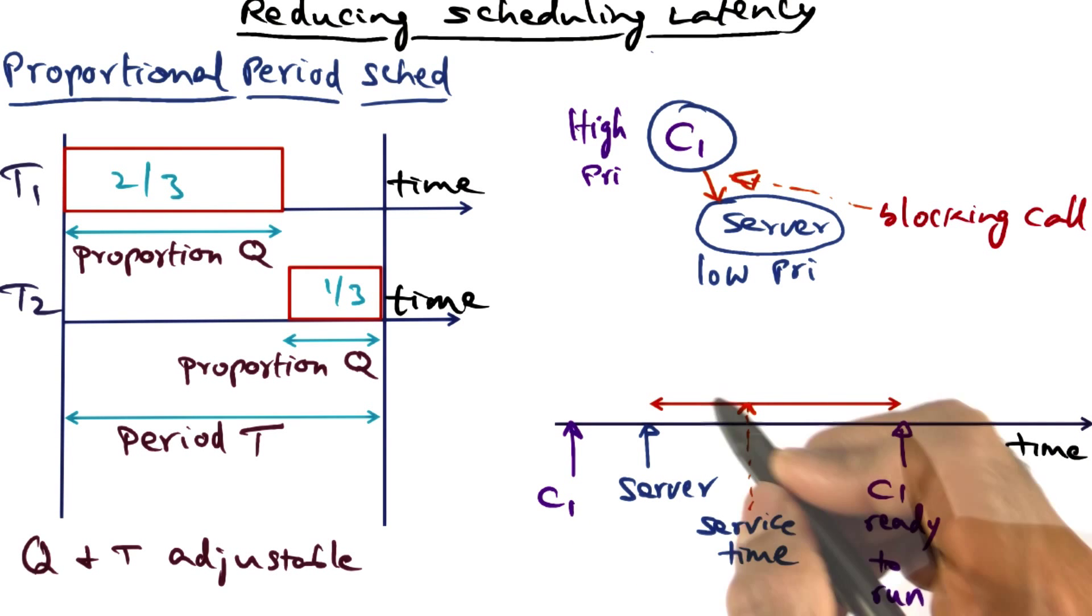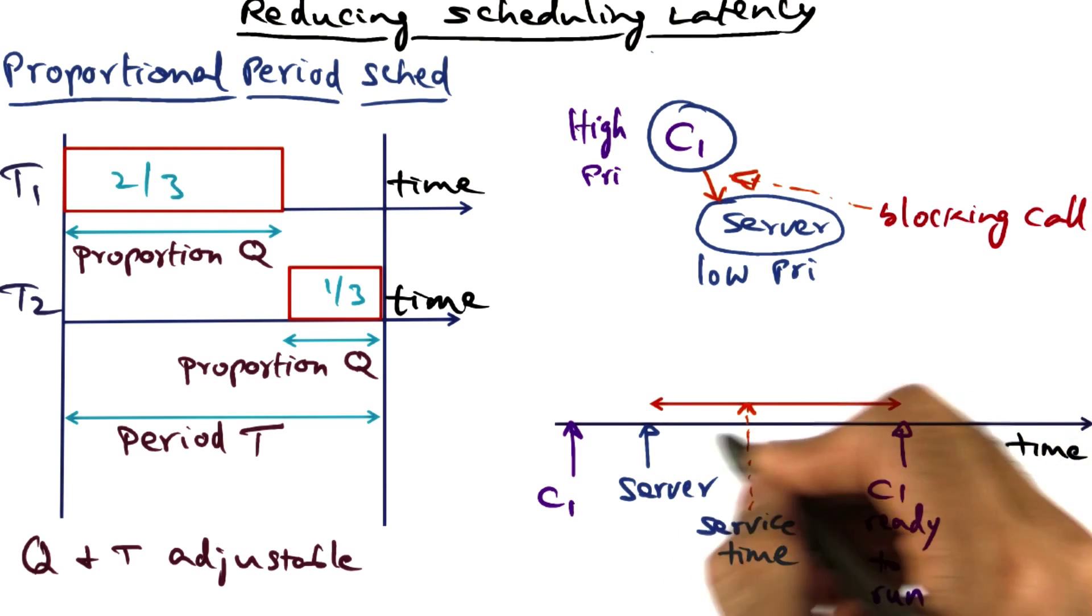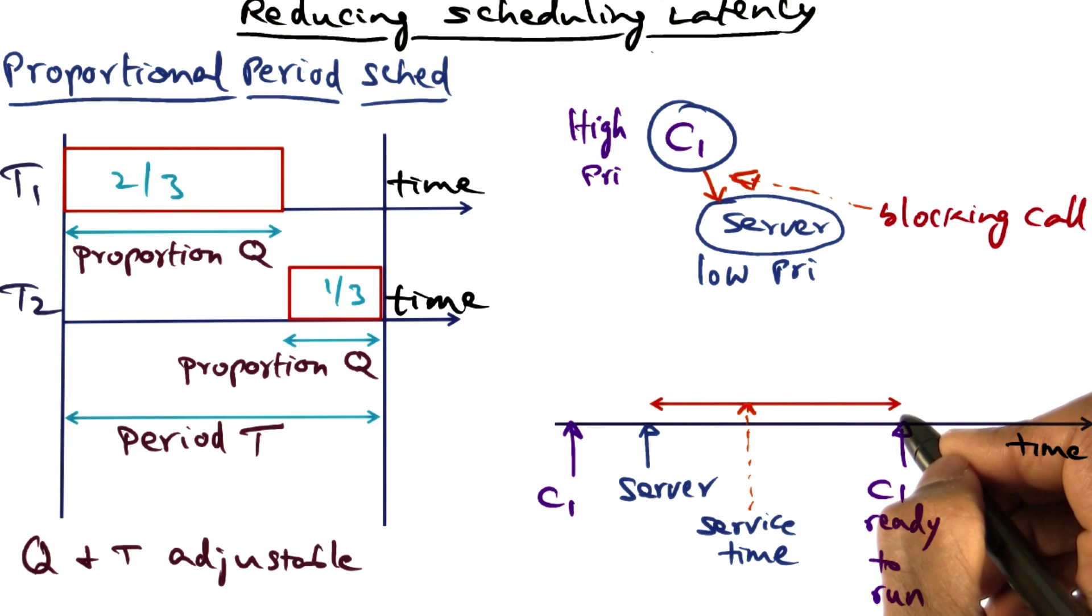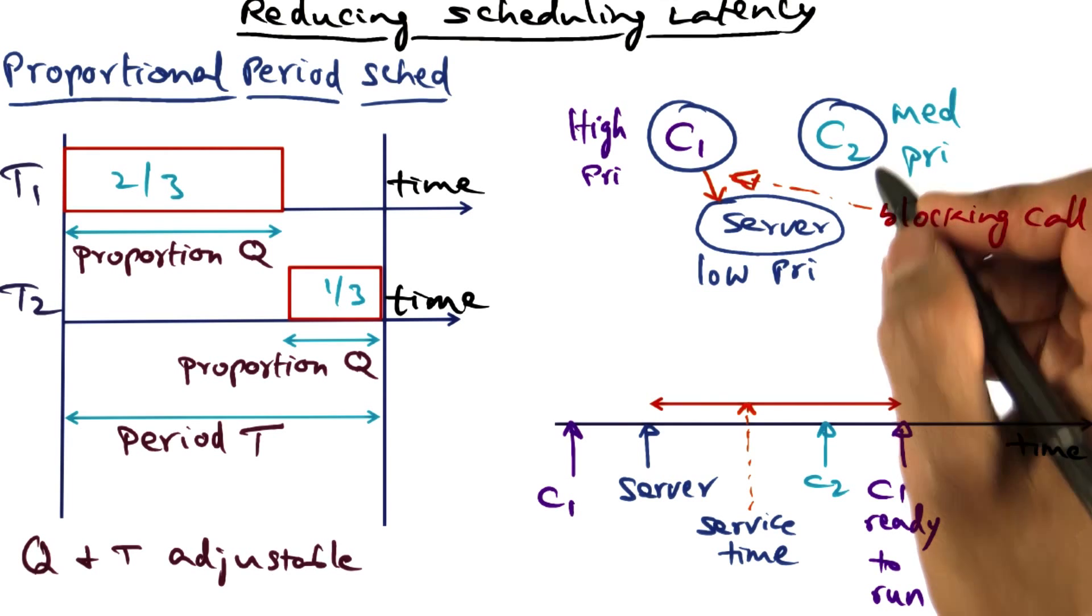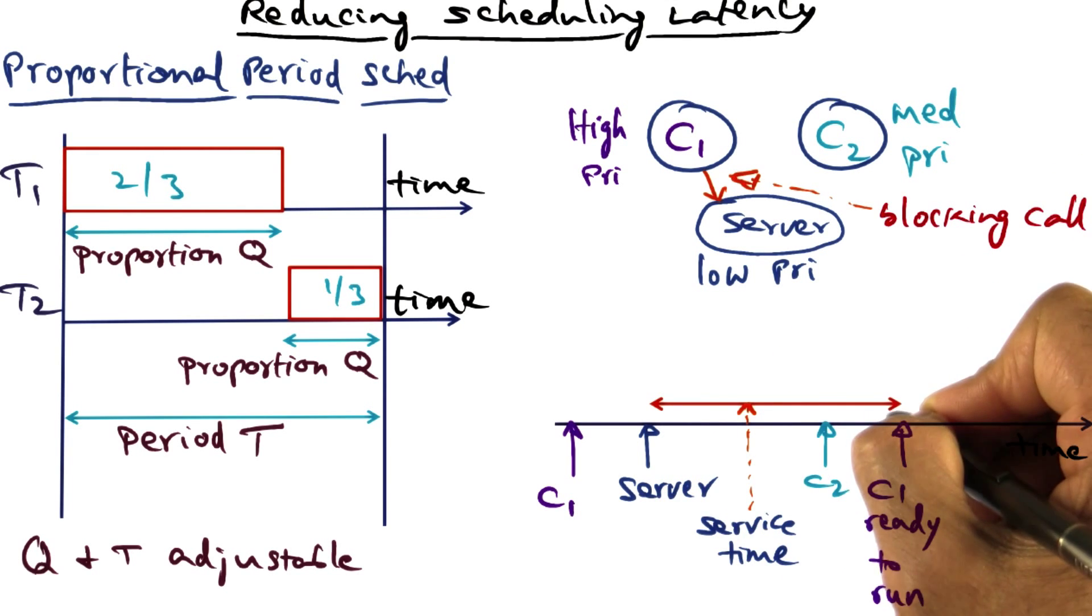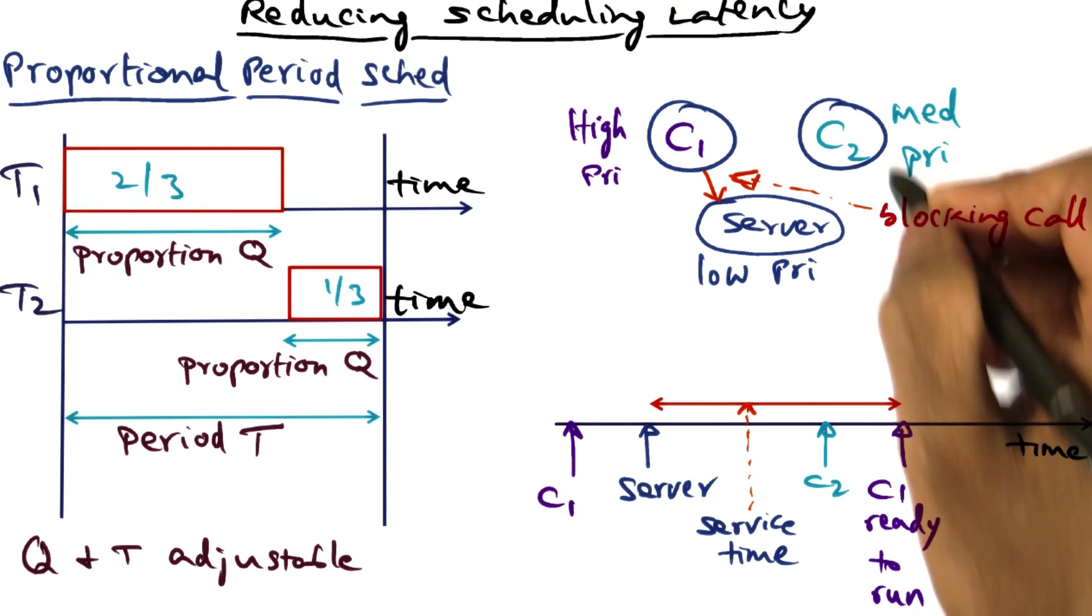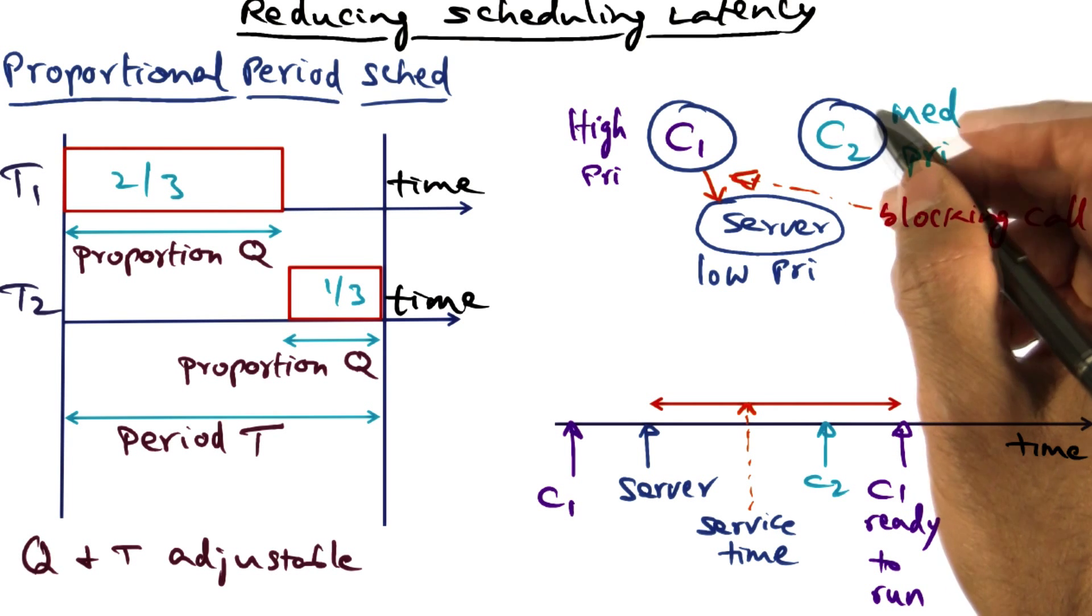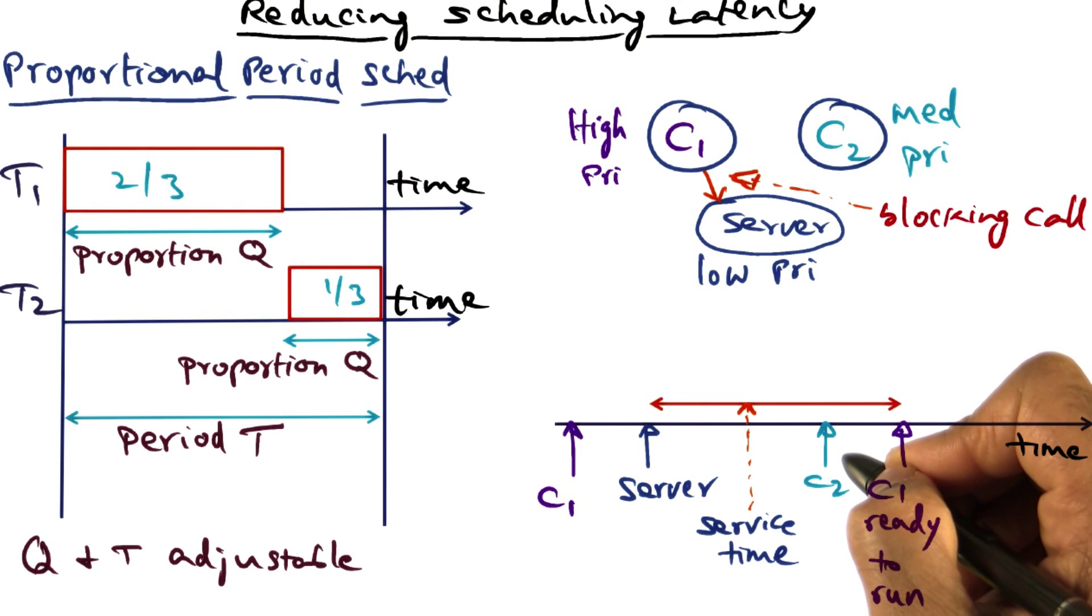C1 is running, and it makes a blocking call at this point, and the server takes over. And this is the service time for the server to execute the blocking call made by C1. So at the end of this service time, C1 is ready to run again, but not so fast. It could be that during the service time of this low priority server on behalf of C1, some higher priority task, C2, which perhaps was waiting for some I/O completion, becomes runnable again. If it becomes runnable again, then this higher priority task compared to this server is going to preempt the server and take over the CPU.